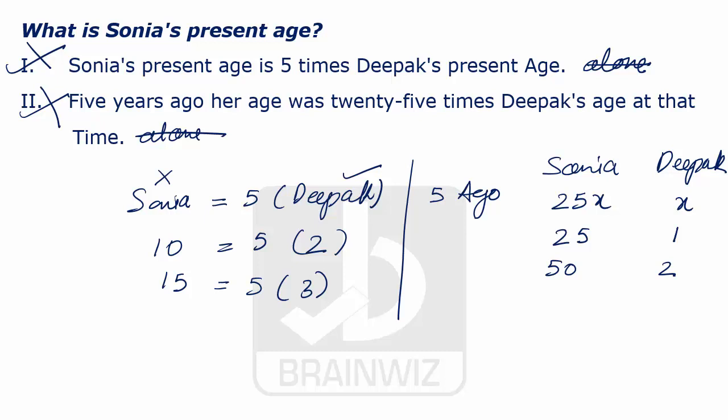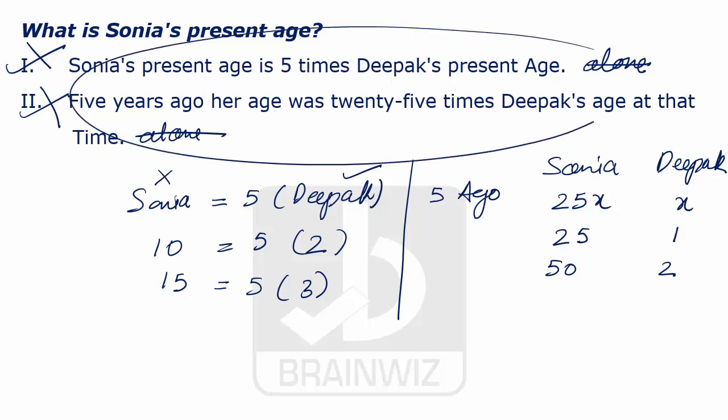Now what we do is we try to club these two statements and check whether the answer is possible or not. If it is possible then we can say the answer is option C. If it is not possible, both together are also insufficient.